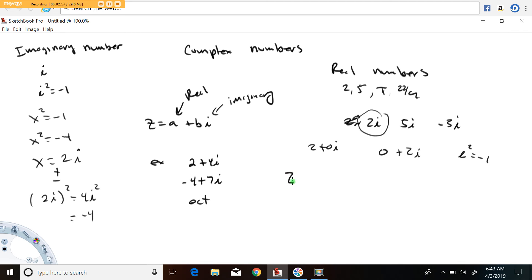We usually write z for complex numbers, I don't know why. But complex numbers in general have this form a plus bi, where a is the real part and bi is the imaginary part.